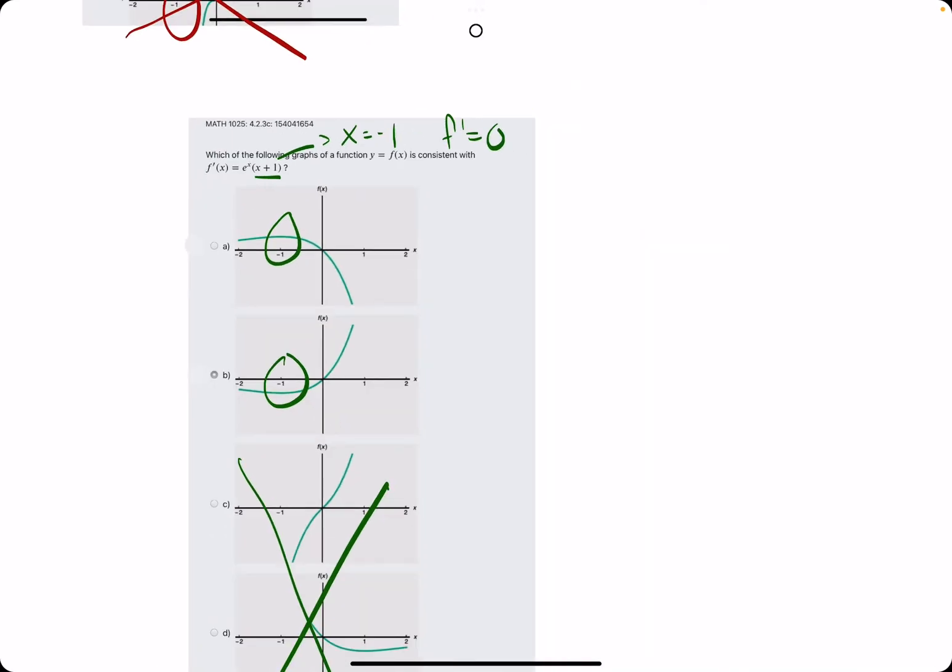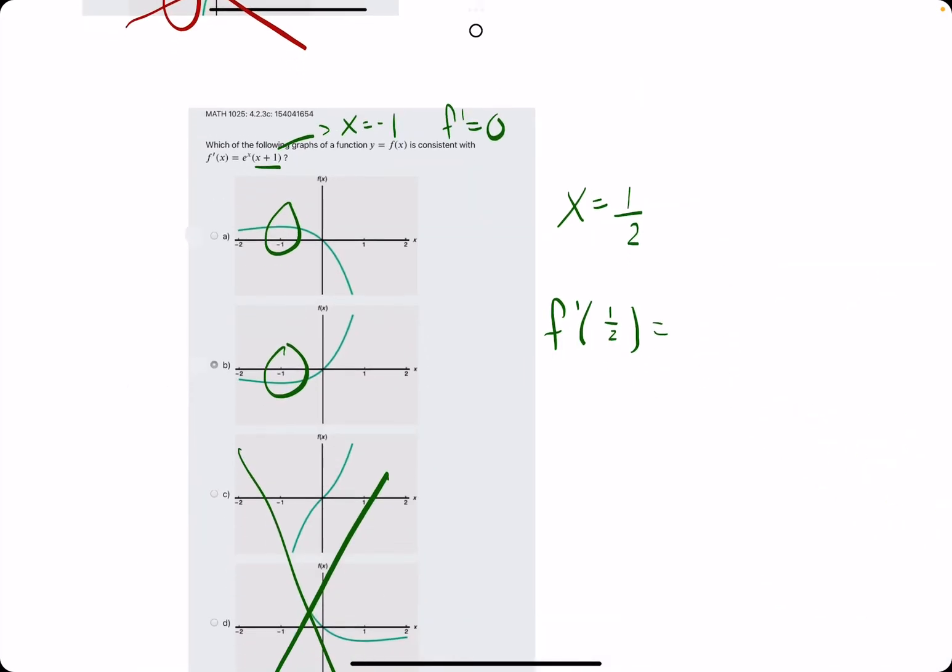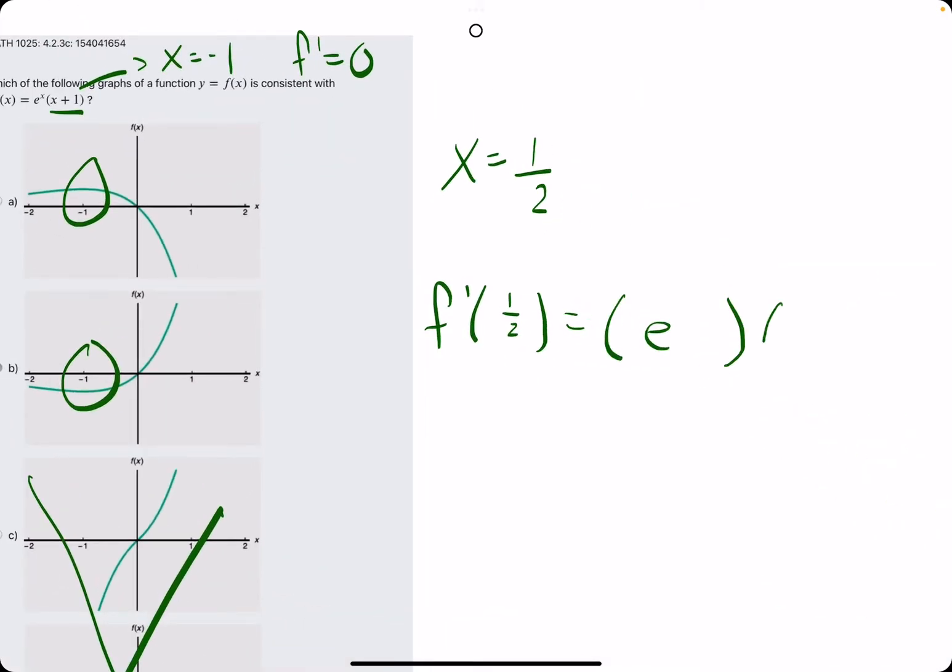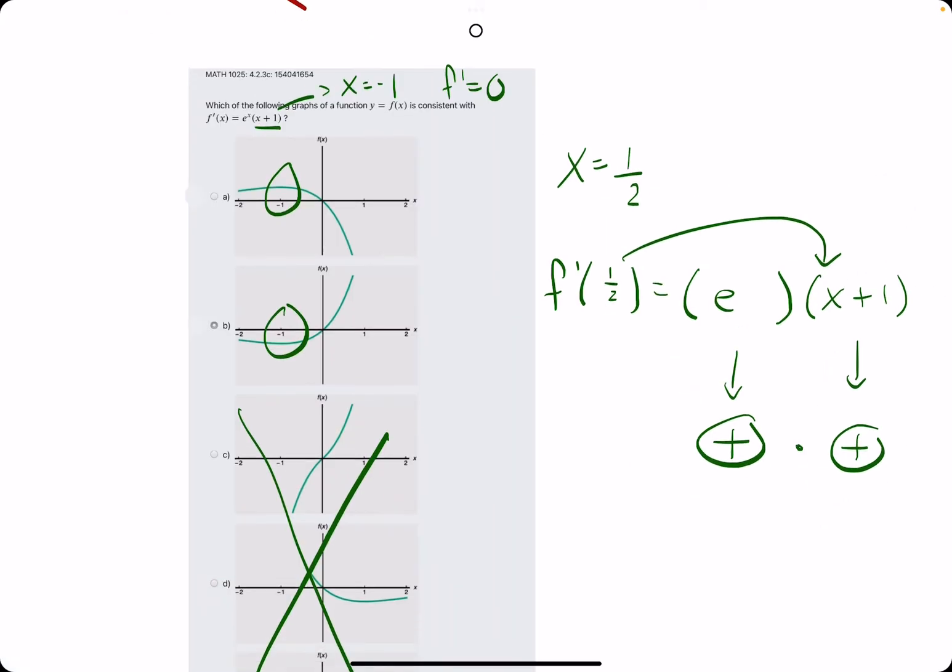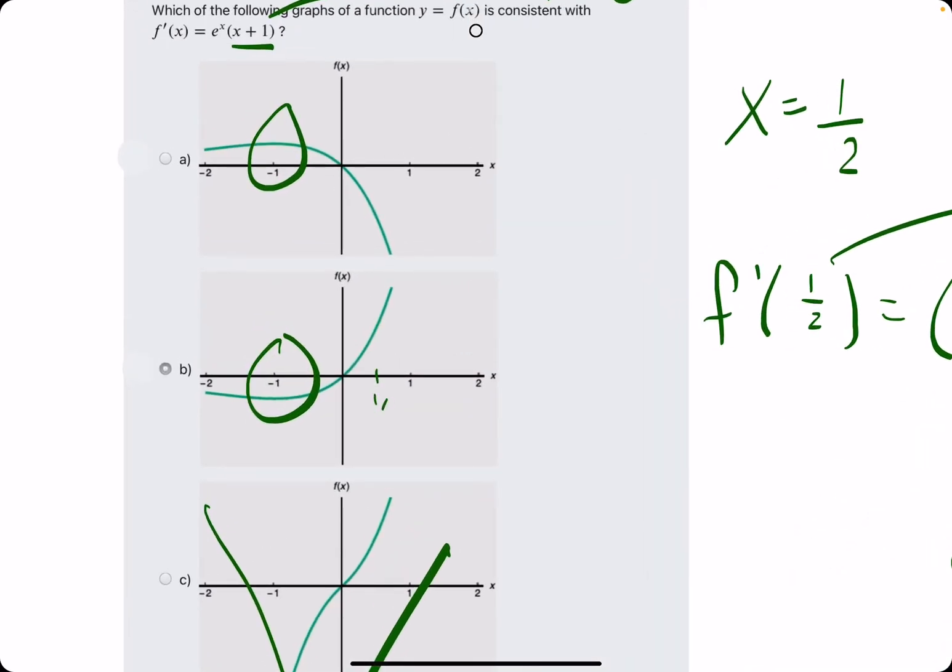So then let's plug in x equals 1 half to f prime. We can break it up with the e term, e to the x, and then x plus 1. E is always positive, and then if we're plugging in 1 half to x plus 1, it stays positive. And so we get positive times positive, which remains positive. So we're looking for the function that has a positive slope at 1 half, and that is option b.